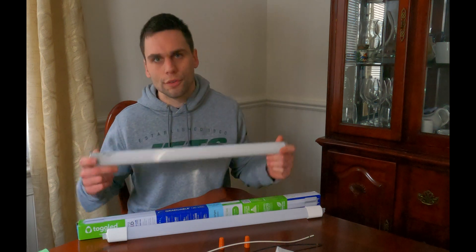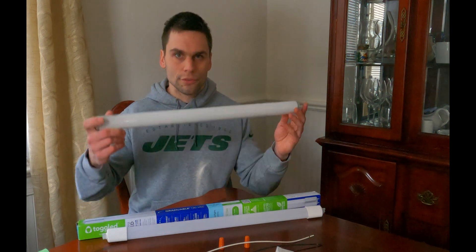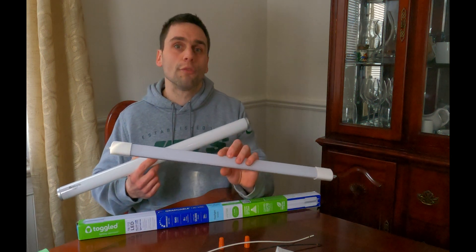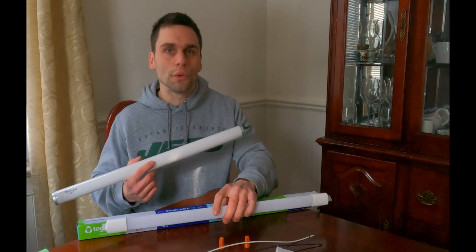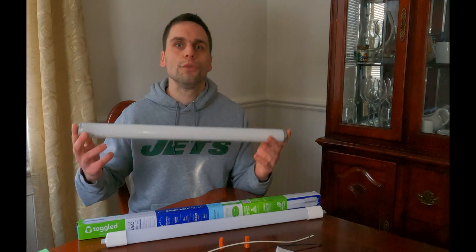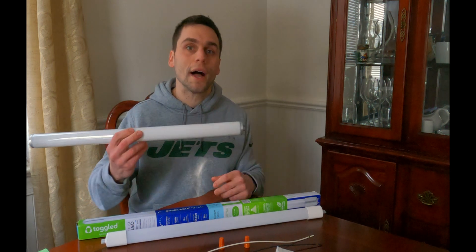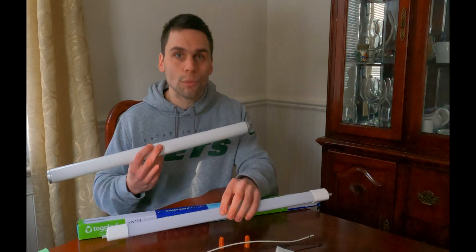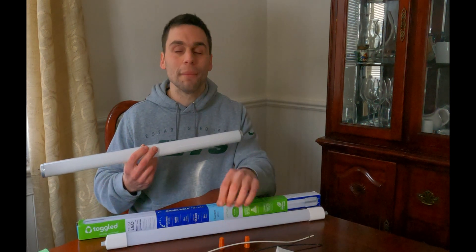Now if you're saying to yourself, but Anthony, why even switch to LED? Why not just stick with the traditional fluorescent bulb? Well, there's a few reasons. Number one is value. The traditional fluorescent bulb will cost you about seven dollars and fifty cents up front for this two foot bulb. The Toggled bulb will cost you about fourteen dollars. So you are going to pay a little bit of a premium buying the Toggled up front, but it absolutely makes up for it.